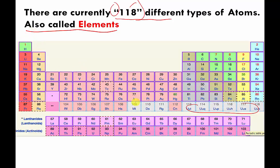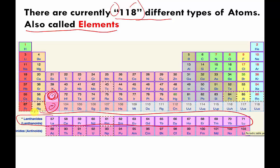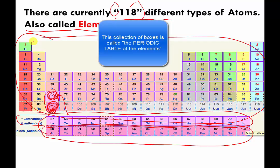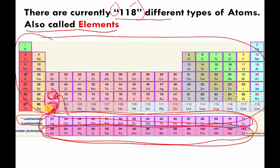There are actually a few more than 118 boxes. These two with asterisks mean that additional rows of boxes should actually be placed in those spots. The problem is that doing so makes the periodic table extremely wide and hard to read, so traditionally people have pulled those two rows out and noted that they belong in those spots — they're just not placed there because it makes things look unwieldy.